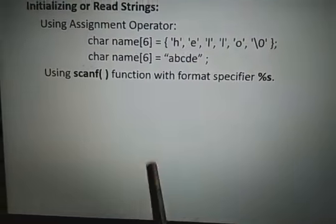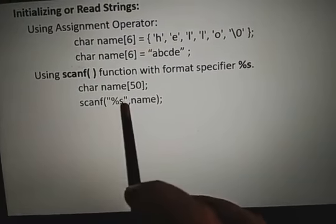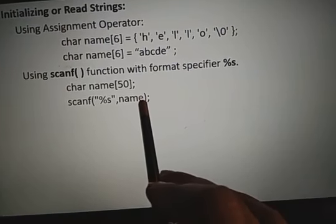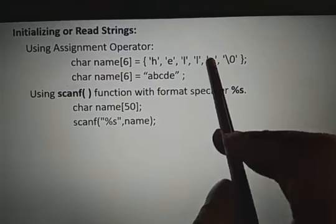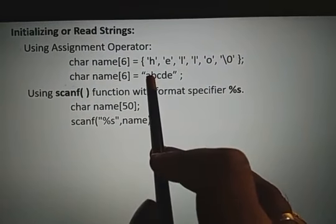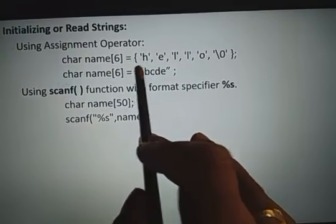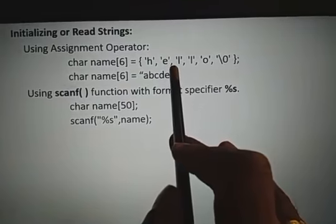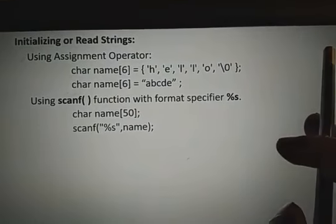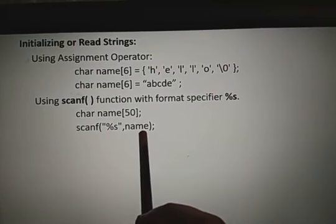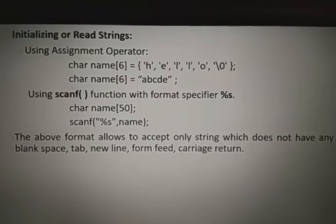Using scanf with percent S and the variable name is another way to initialize a string. This is static initialization. Single characters use single quotation marks; a group of characters uses double quotation marks. A value in double quotation marks is called a string. With scanf and percent S, it will take only one word and will not accept blank spaces, tabs, or newlines.